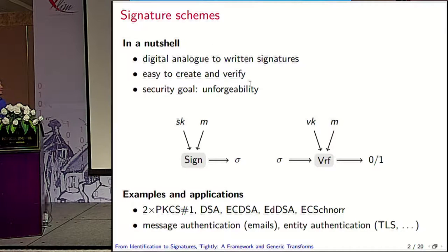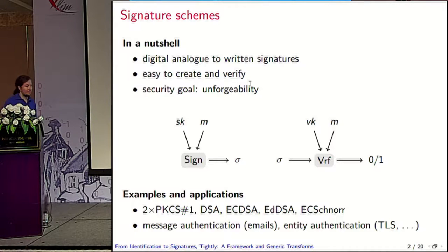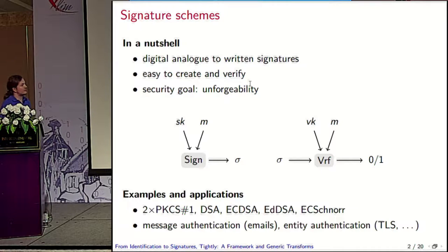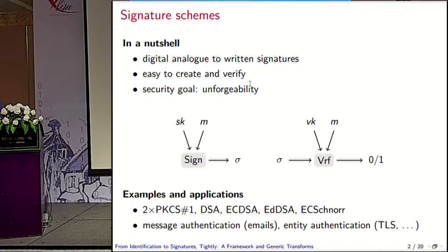I start with a brief introduction of what signature schemes is. I guess all of you know what this is and we have seen it a couple of times on this conference already, so this is just to fix the syntax. We have a signing algorithm and it outputs a signature which I denote with sigma. It gets a secret key, a signing key. It gets the verification algorithm on this side. It gets a verification key and it gets a signature and it will indicate with a zero or one whether a signature on M is considered valid or not.